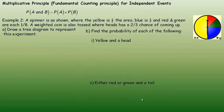On to the multiplicative principle for independent events. In example two, a spinner has yellow covering half the area, blue covering one-quarter, and red and green each covering one-eighth of the area. We're also going to throw a weighted coin where the probability of heads is two-thirds and tails is one-third. We're going to draw a tree diagram to represent this experiment.